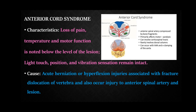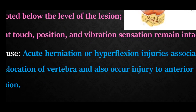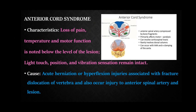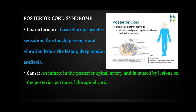Anterior cord syndrome is mainly characterized by loss of pain, temperature, and motor function below the level of lesion, while light touch, position sense, and vibration are preserved. This is because the lateral spinothalamic tract in the anterior portion, which controls pain and temperature, is affected. The main causes include acute disc herniation and hyperflexion injury associated with fracture dislocation of a vertebra, and it may also be caused by injury to the anterior spinal artery.